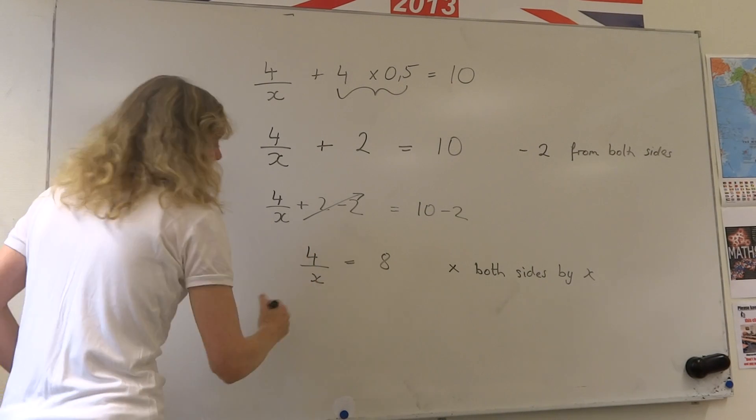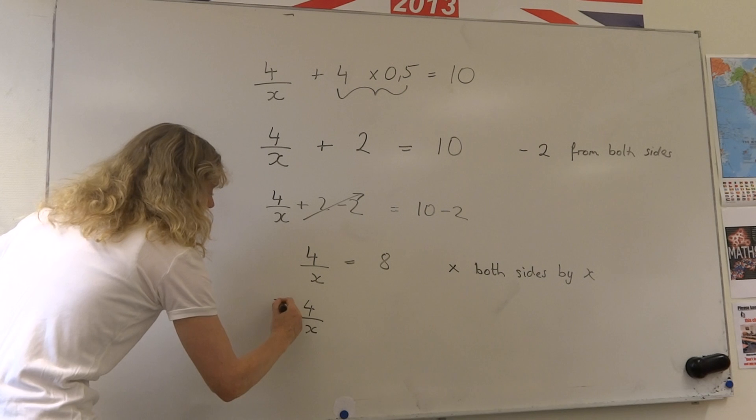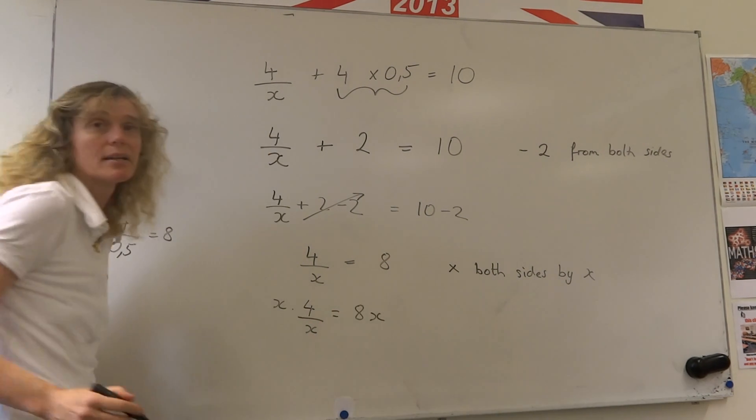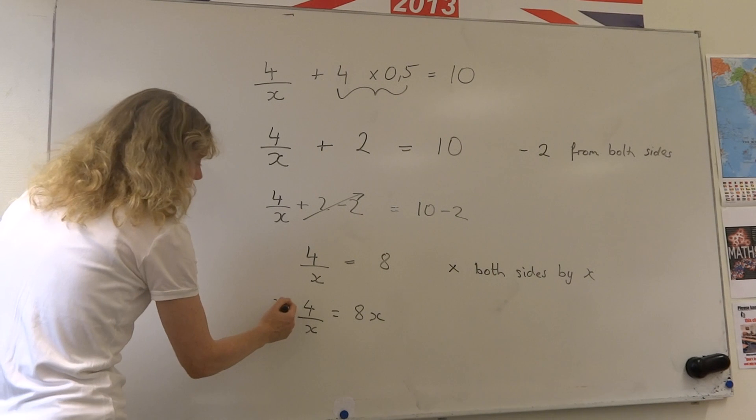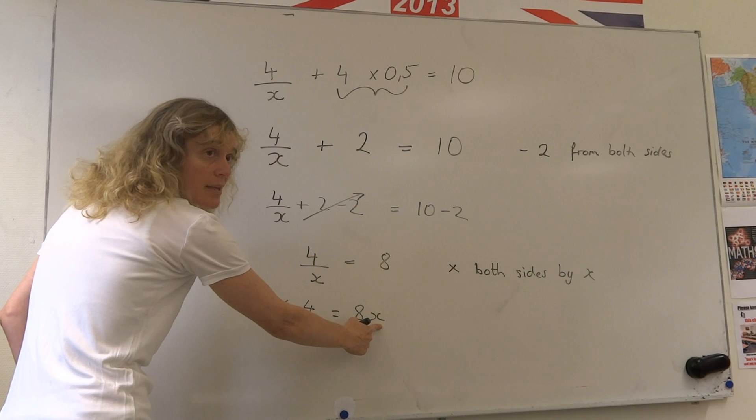So I'm multiplying both of my sides of the equation by x. So what will I get then? I'll get 4 divided by x times x equals 8x. The x's here cancel. x divided by x is 1. And I get 4 equals 8x.